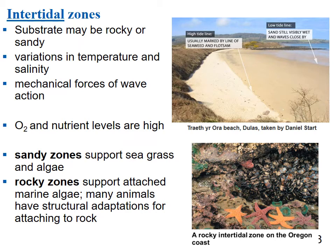Intertidal zones are between the high tide line and the low tide line. The substrate can be rocky or sandy, with variation in temperature and salinity. Organisms here must deal with these variations and with the mechanical forces of wave action. Intertidal zones generally have high oxygen and nutrient levels. Sandy zones support seagrass and algae; rocky zones support attached marine algae and animals with structural adaptations for gripping rocks, like starfish.